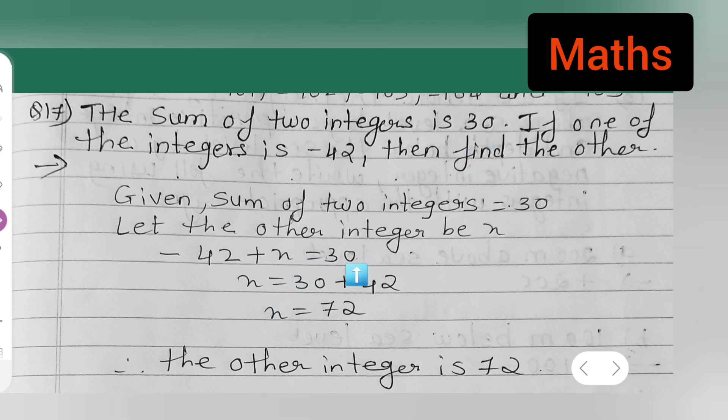Now, x is equal to 30... When you take this -42 to the other side, it will become positive sign. Plus 42. So, x = 30 + 42 will give you 72. Add these two numbers, you will get 72.